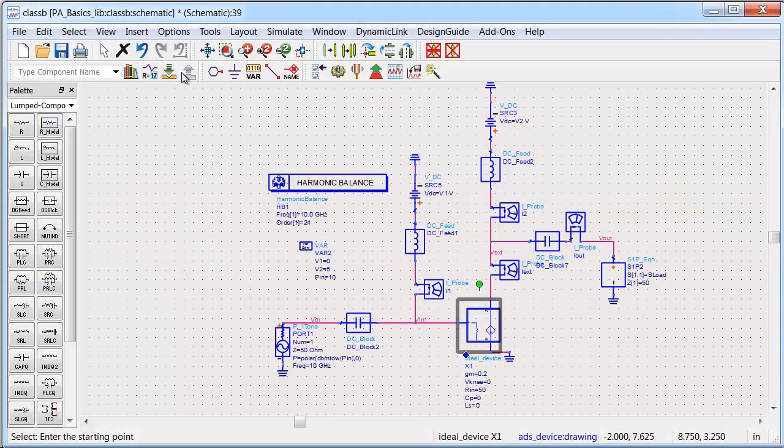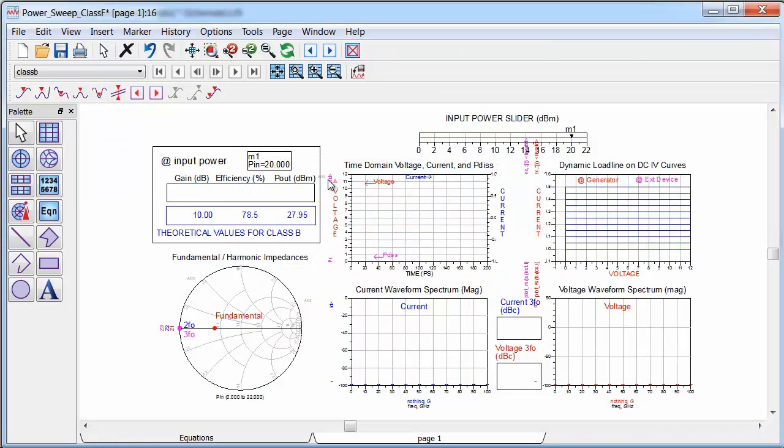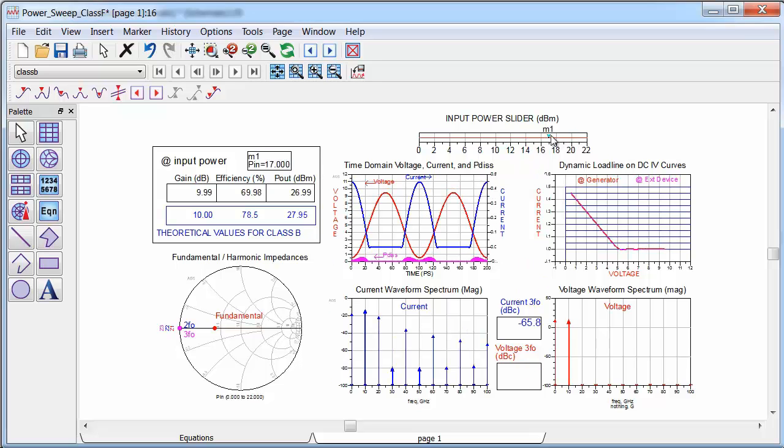So I want to start with a Class B power amplifier, and I can simulate this with my transistor model by setting the input bias to zero, and then I'll also sweep the input power. In the data display, I'm then able to adjust the input power with this slider, and I can look at the gain, the power, the efficiency, and also the voltage and current waveforms and the load line at the device, as well as the spectrum for voltage and current, and also the fundamental and harmonic impedances at the device. At the input power where the load line hits the knee voltage, you can see that I do indeed get an efficiency of 78.5%, which is the theoretical limit for Class B.